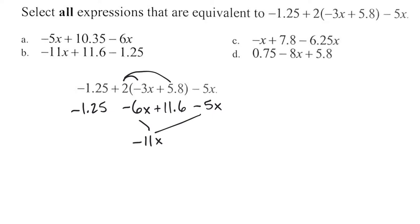And then what I can do also, I can combine my like terms, which is this and this. So I need to get 11.6 minus 1.25. Check this out. Notice this answer is actually already here because if we have negative 11x which is here, we have plus 11.6 which is here, and minus 1.25 which is here. We already see one of the answers right there.